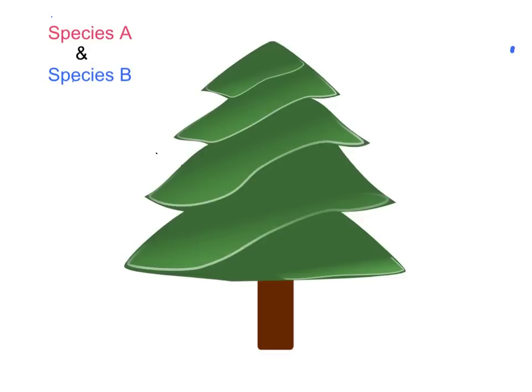Now, if species A and species B try to occupy the same area, species B has no choice but to live in those upper branches. Because if it lives in the lower branches, it's going to get eaten by the cats. Species A could live in the higher branches. But it's to species A's advantage to occupy only those lower branches.